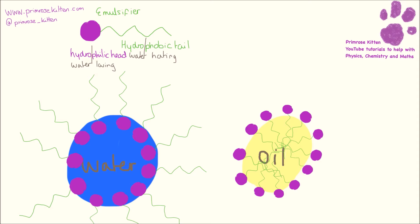Now there are two different ways an emulsifier can make a mixture of oil and water. The hydrophilic head can take little globules of water and then have oil around the outside of them — so the head would be dissolved in a little bubble of water and the tail dissolved in the suspension of oil. Or there can be a suspension of water with the hydrophilic heads on the outside and the hydrophobic tails on the inside.